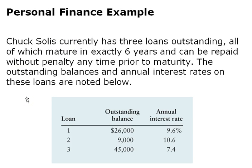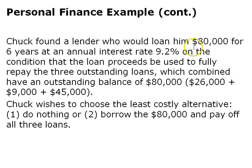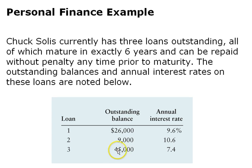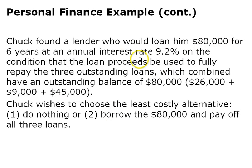Here is a personal finance example. Chuck has three outstanding loans, all maturing in six years: a $26,000 loan at 9.6%, a $9,000 loan at 10.6%, and a $45,000 loan at 7.4%, for a total of $80,000. He found a lender who will loan him $80,000 for six years at 9.2%, on the condition the proceeds are used to fully repay the three outstanding loans. Chuck wishes to choose the least costly alternative—do nothing or borrow the $80,000.